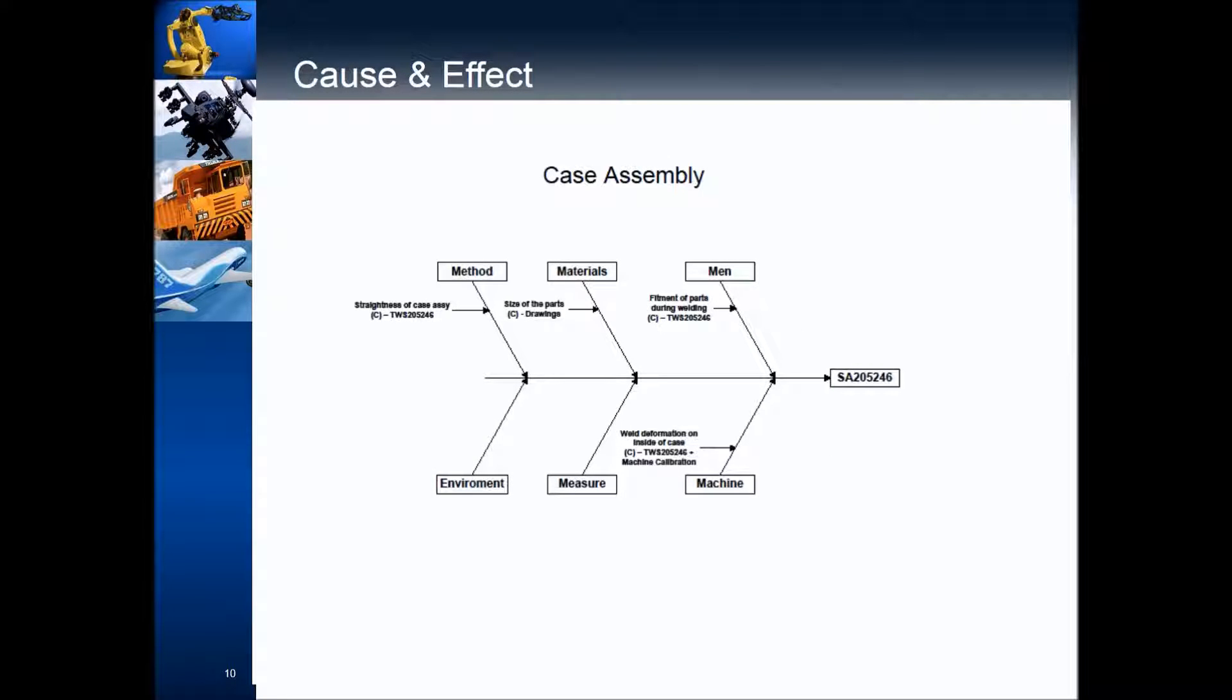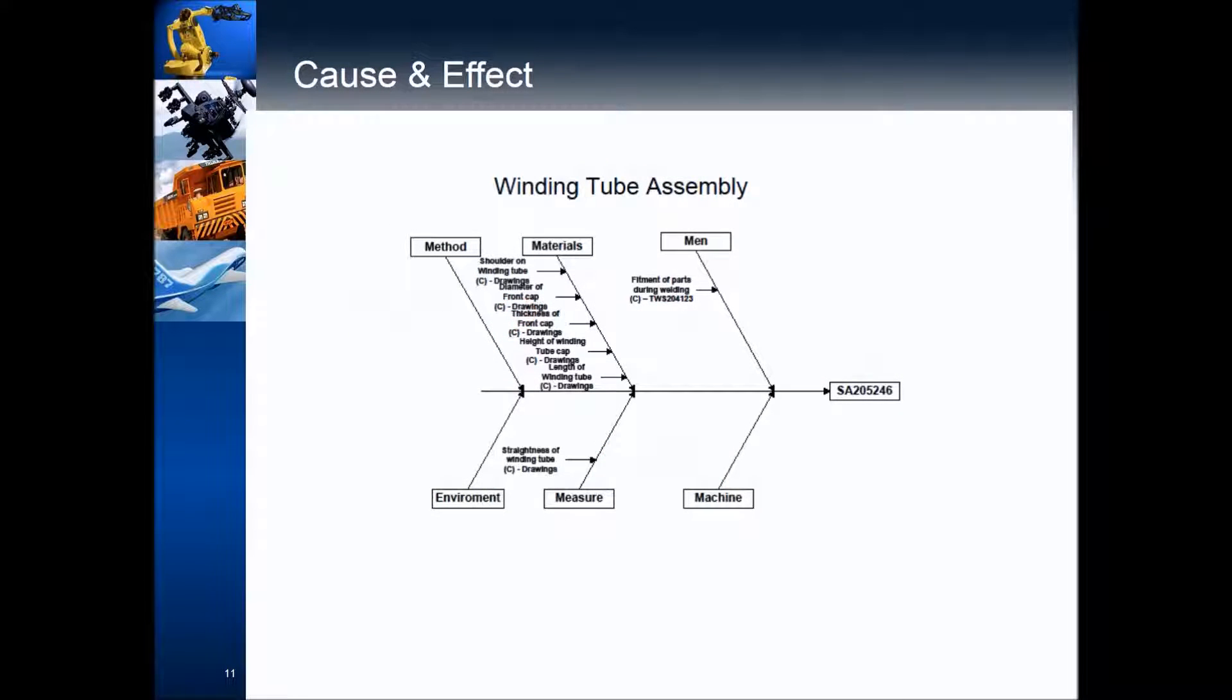Then we start looking at the variables. Are the variables under control? Well, if you look, lots of C's here. So that's telling us that, actually, the process is well controlled. Do we have a standard operating procedure? Are we happy with that standard operating procedure? Is it clear and unambiguous? And do we use it? The answer here is, yeah. Tube winding. Again, all C's. Yeah, the whole thing. Happy. Process is in control. All good.